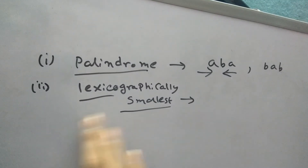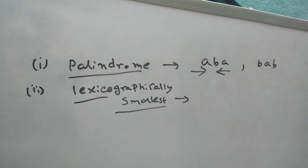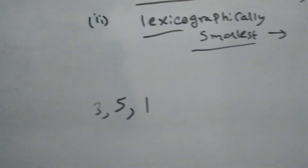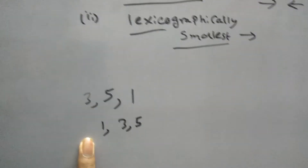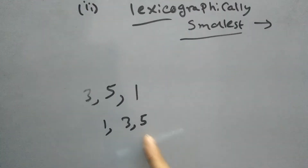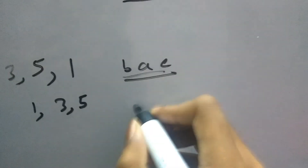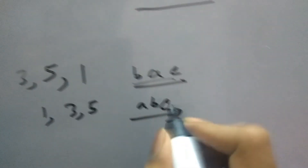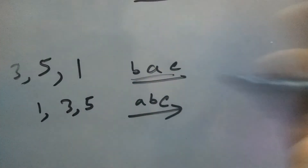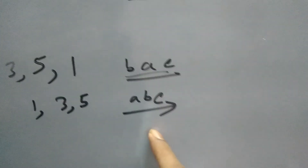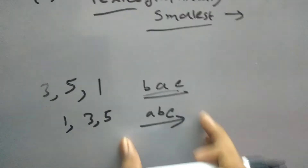Now let's focus on what lexicographically means. You can think of it like sorting numbers: if you have 3, 5, 1, sorting them gives 1, 3, 5 in ascending order. It's the same idea for letters. If we have A, C, B, A, C, the sorted order would obviously be A, A, B, C, C. So the smallest or earliest letter comes first. This is called lexicographically sorted, and this is the main goal we have to achieve here.